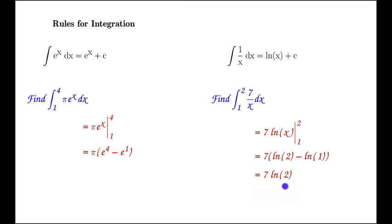We can simplify this further using log rules. Since 7·ln(2) is the same as ln(2^7), or ln(128), our final answer is ln(128).